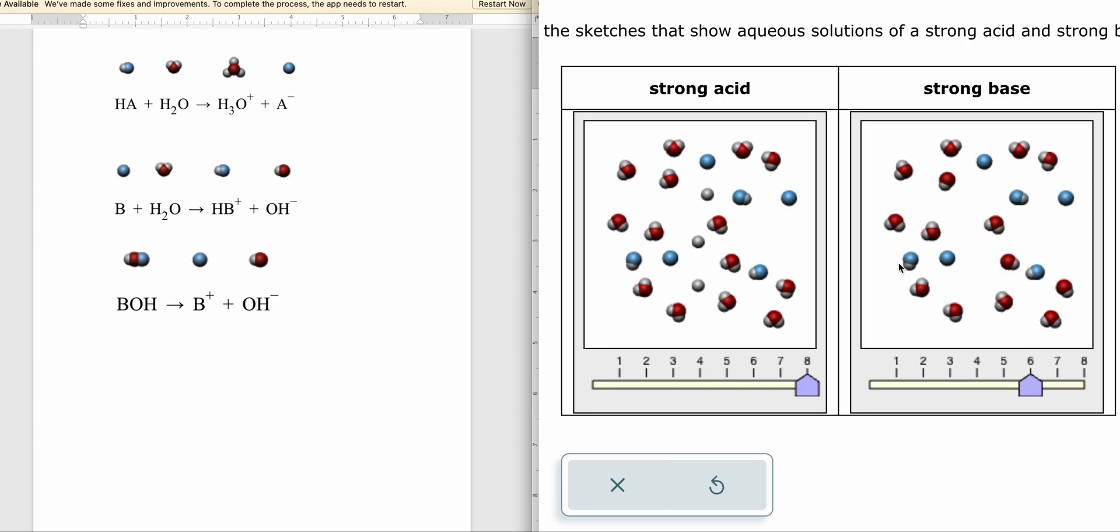This right here, we have acids and its conjugates, but that's certainly not a base. Here we have no B pluses at all, and then here we have a bunch of BOH's. So in both these scenarios, the only correct answer would be one and one. Hopefully, this has been helpful.